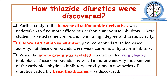Chlorothiazide and other thiazide diuretics were made by acylation of the amino group. When acylation of the amino group occurs, an unexpected ring closure takes place. This ring closure results in high diuretic activity that is independent of carbonic anhydrase inhibition. Thiazide diuretics were thus discovered during the carbonic anhydrase inhibitor development phase, and once the amino group is acylated, ring closure occurs.